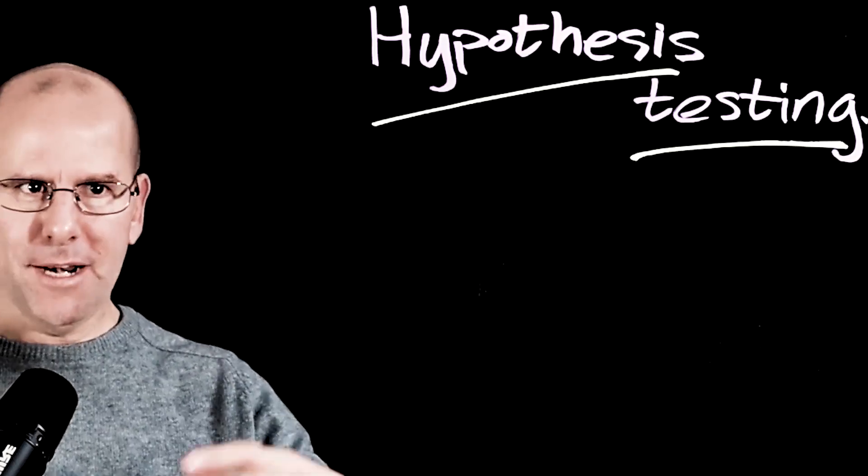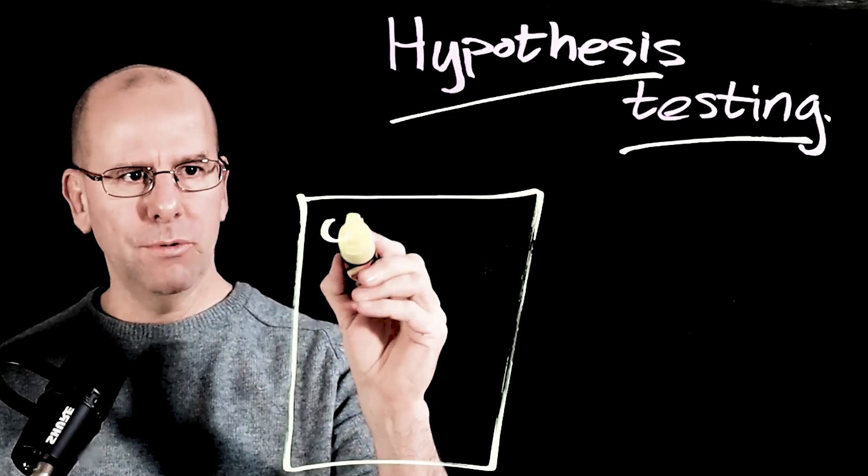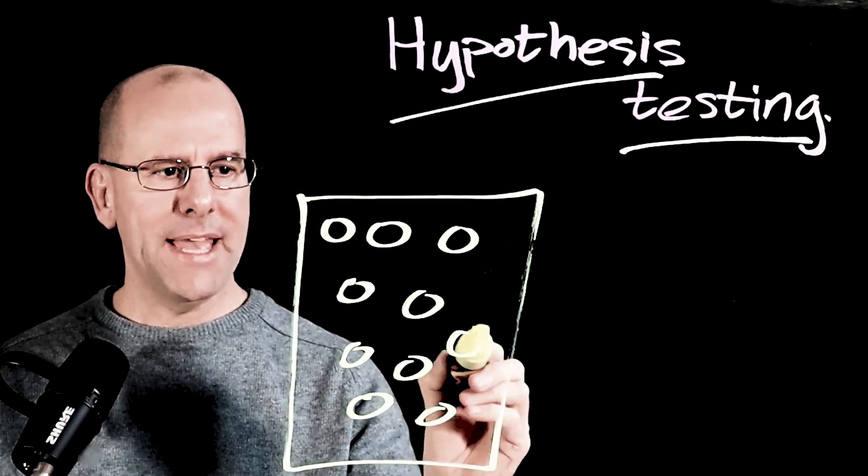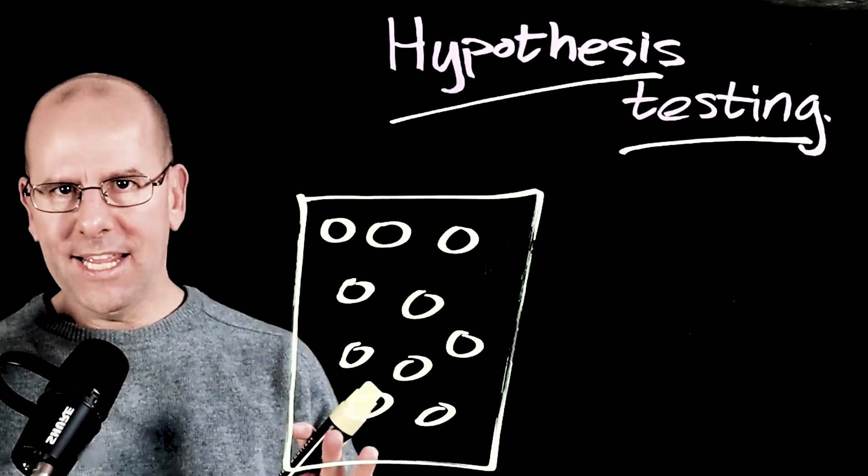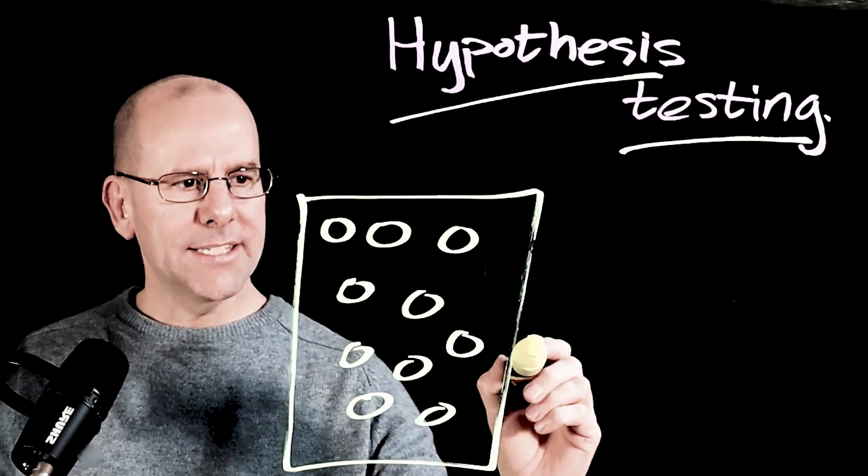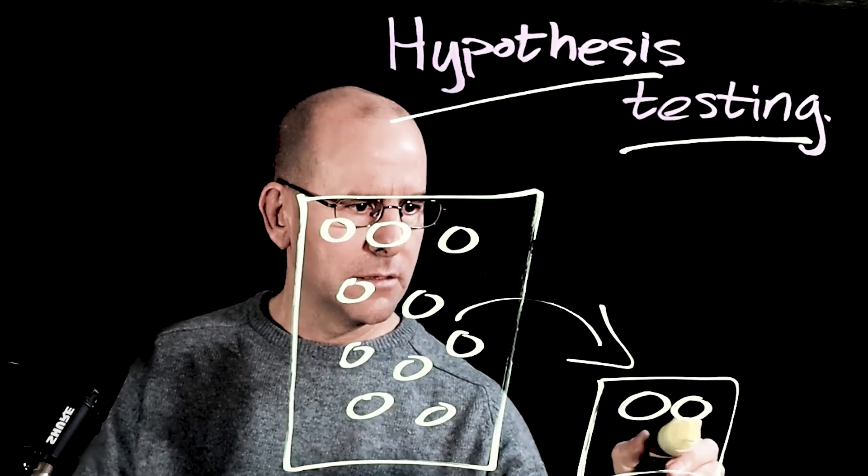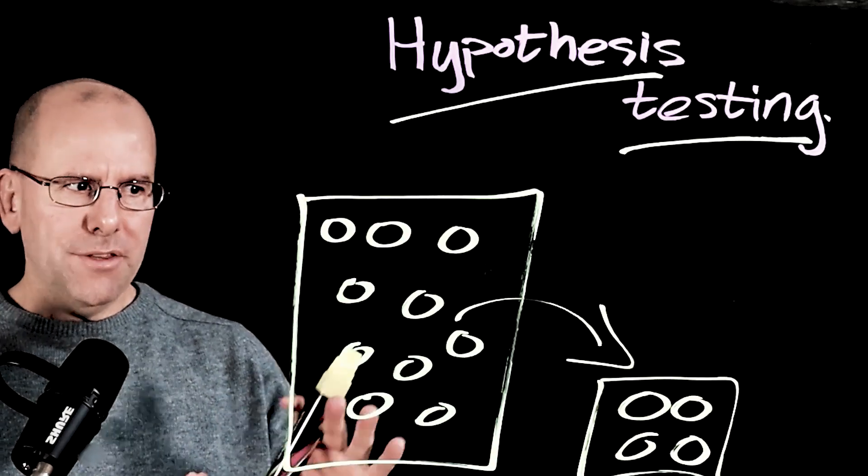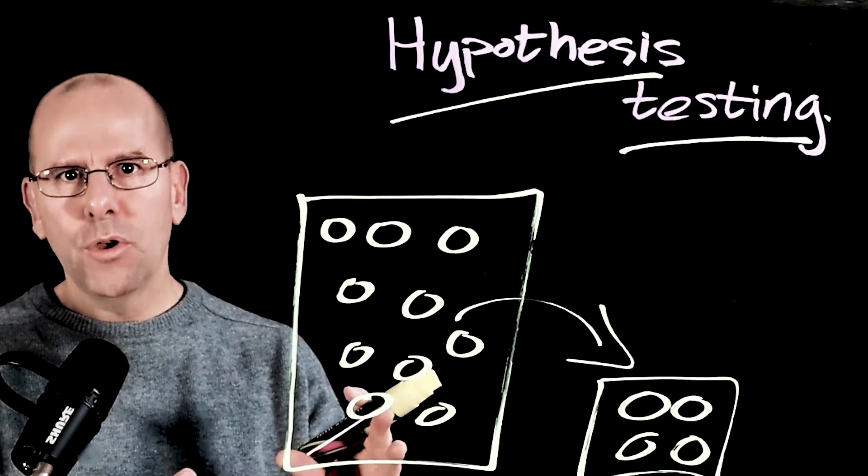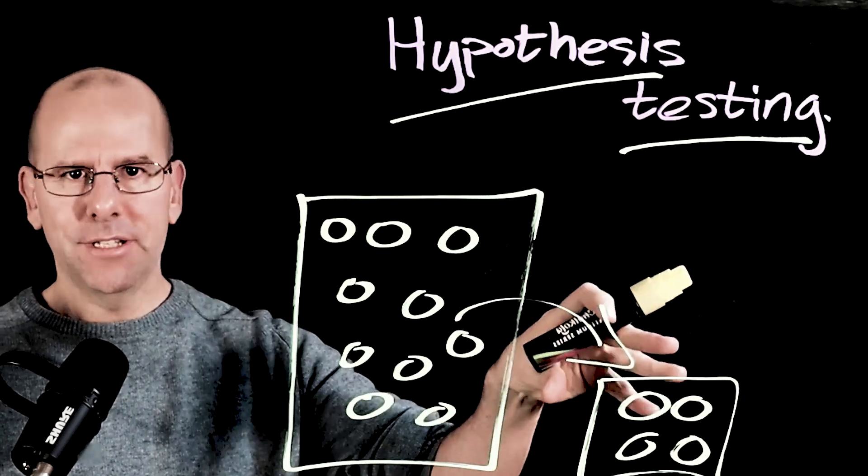Our starting point is we may have a question about a population. So let's imagine there's a population here. It could be everybody in Ireland and we've got all of these little people. Maybe it's the average weight of men in this population. Now we can't weigh everybody in Ireland or all of the men. So what do we do instead? Instead of weighing all of them we take a sample of men and assuming that the sample is a random sample, in other words it's representative of the wider population, we can make inference about the population by looking at the parameters and the characteristics of that sample.